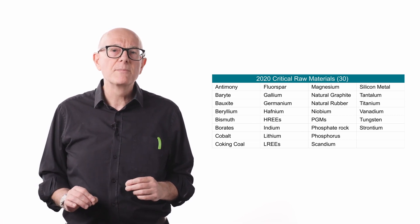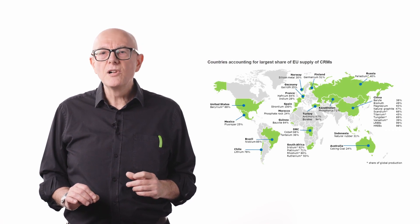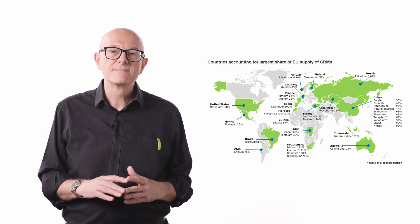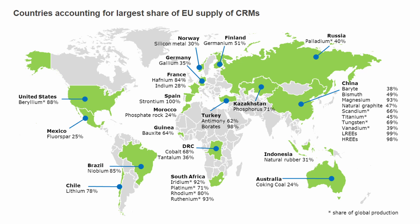This world map highlights the percentage of supply dependence of selected critical materials from certain countries. The higher the percentage the more import dependent the EU is from that country. Look at China for example — there are geopolitical tensions and trade tensions with China ongoing, and human rights in China remains a concern for the EU. Look at the Democratic Republic of Congo, or DRC, in Africa — a country in conflict or post-conflict with human rights challenges. Note how few materials come from within the EU or from countries with whom the EU has close friendly relationships.